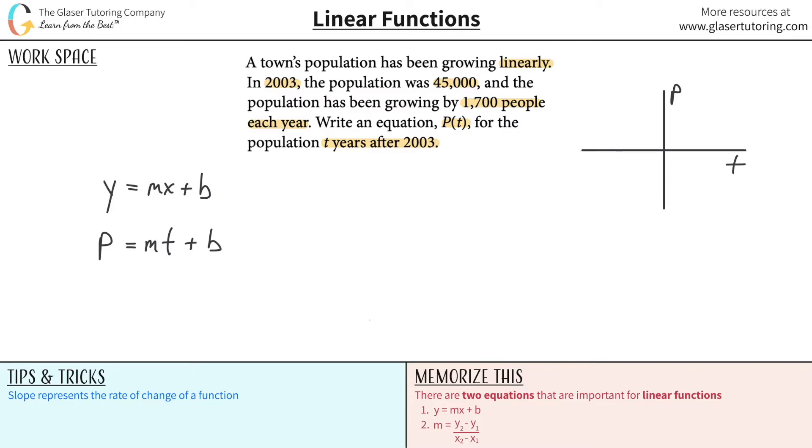In 2003 the population was 45,000. Let's make a little timeline. So 2003, the population was 45,000. This represents t, this represents the population. The population has been growing 1,700 people per year, so the next year in 2004 the population would be 46,700.